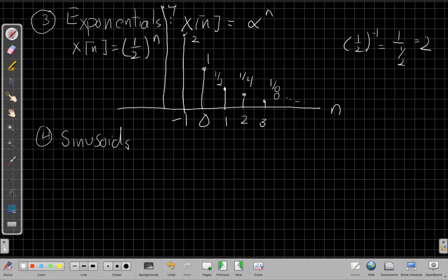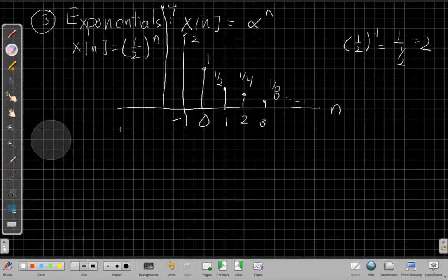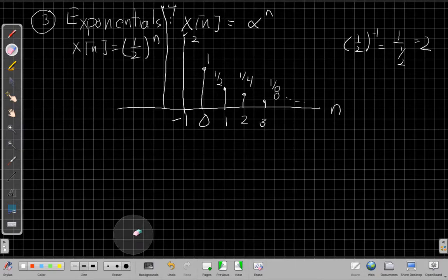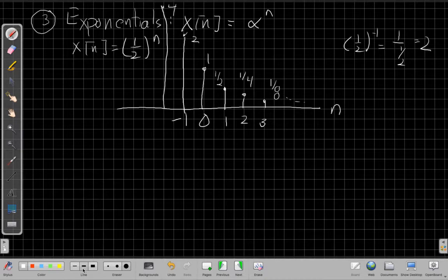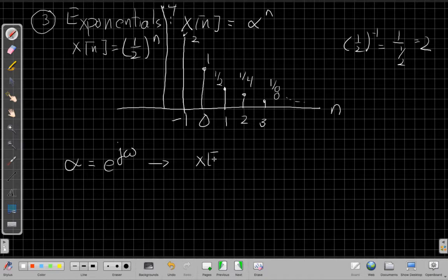So before we go to sinusoidal, let me mention one other thing. Let me move that out of the way and I'll do sinusoids on the next page. Another important case, though, a very special case we'll use a lot, is the case when alpha is a complex exponential. So something like the form of e to the j omega, which is equal to, if I use that, if I plug that in for alpha above, I get x of n is e to the j omega n.